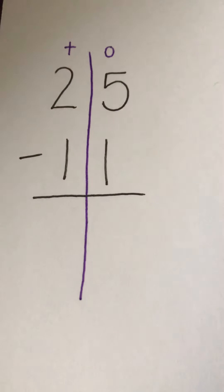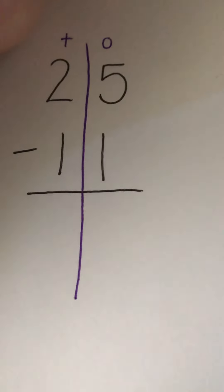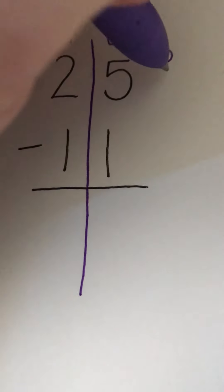So remember that whenever we're doing subtraction or we're doing takeaway, you're going to start with your bigger number. So I'm going to draw five circles. One, two, three, four, five.